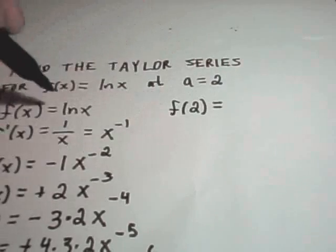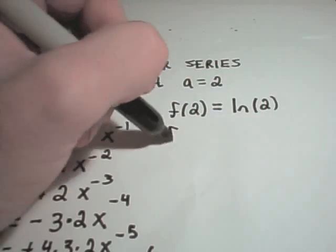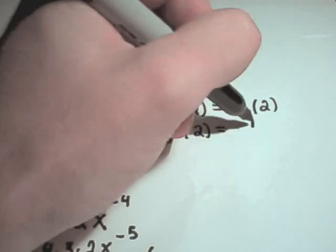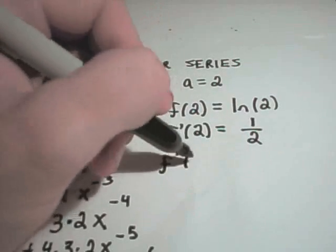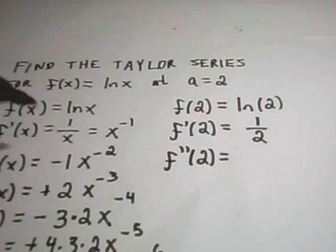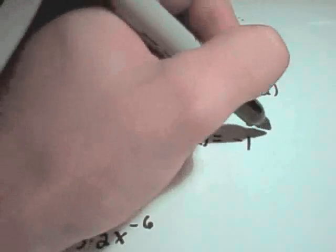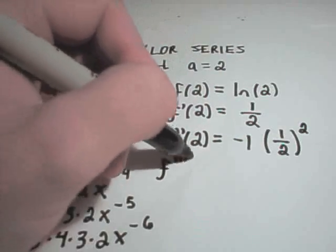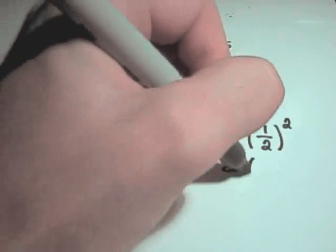So f of 2 is just simply going to give us the natural logarithm of 2. f prime of 2, that's going to give us, looks like, I'm going to write that as 1 over 2. f double prime of 2, if I plug that in, I'm now going to get negative 1 and I'll get 1 over 2 squared. f triple prime of 2, that's going to give me 2 times, well, 1 over 2 cubed.